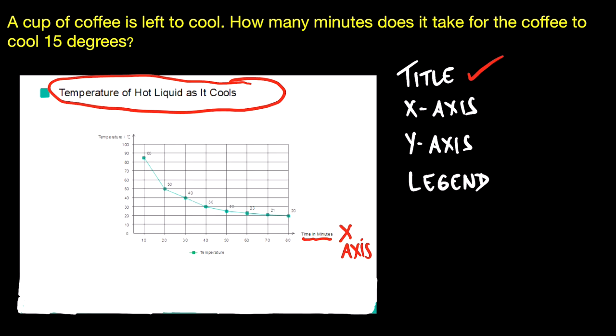Then the third thing that you want to do is look at the y-axis. So the y-axis is the vertical line, the vertical axis, and here you can see its temperature in degrees centigrade. And it starts at 0 degrees, 10 degrees, 20 degrees, and so forth.